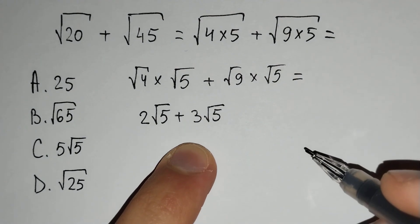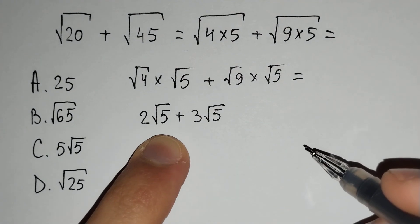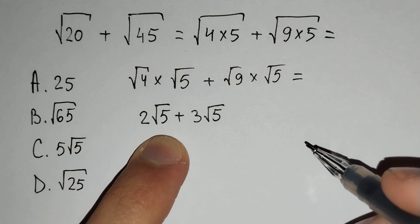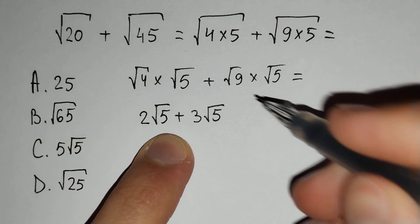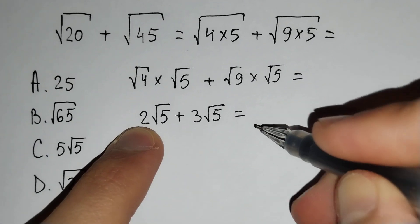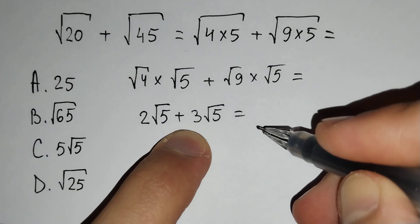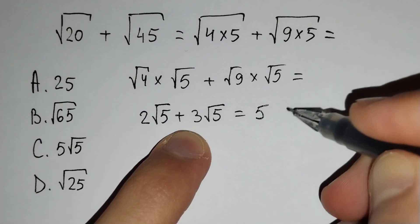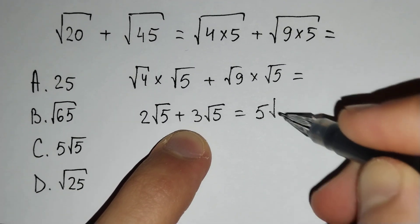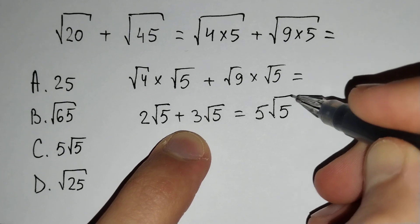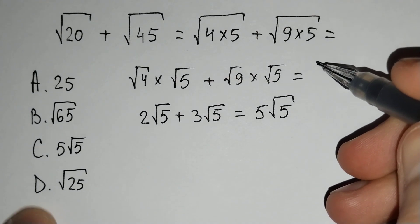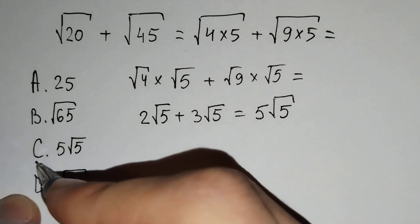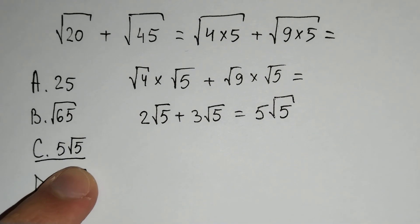You can see the square root of 5 terms are the same. Then we will just add 2 to 3. 2 plus 3 is equal to 5, times square root of 5. The correct answer to our question is C: 5 square root of 5.